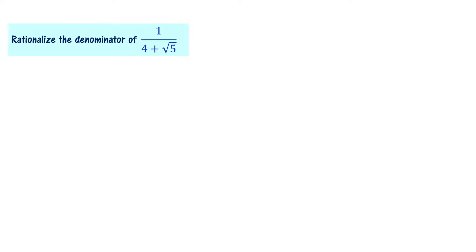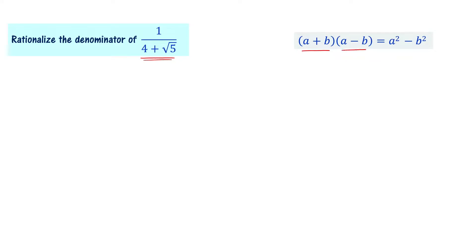Let's look at another problem: rationalize the denominator of 1 by (4 plus root 5). The denominator 4 plus root 5 is an irrational number. We can make use of the formula: (A plus B) times (A minus B) equals A squared minus B squared.